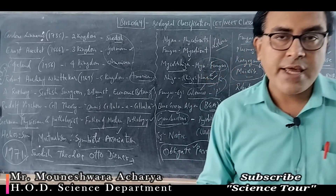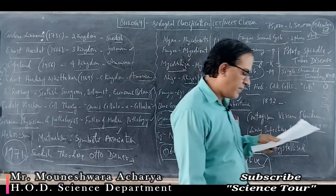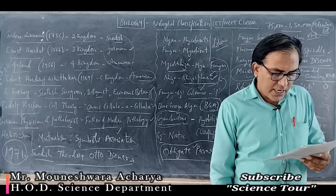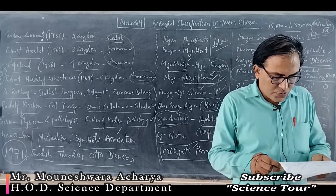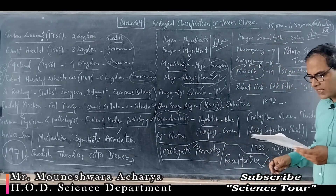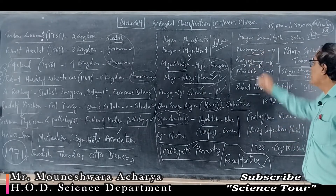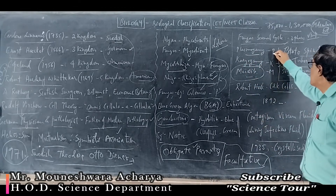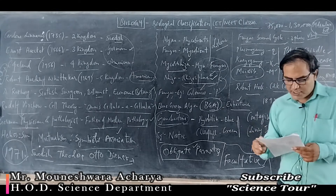Question 10: With respect to fungal sexual cycle, choose the correct sequence of events. Already discussed in relation to question 6. The sexual cycle of fungi has three important phases: Plasmogamy, Karyogamy, and Meiosis — P-K-M. The right option is option B.